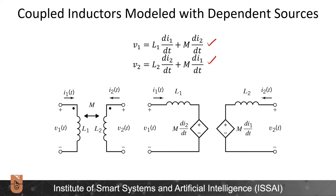We can convert a coupled inductor circuit to a circuit with dependent sources, allowing us to utilize all the circuit analysis methods we have learned. The first part of the circuit is represented with an inductor L1 and a dependent source depending on the current i2. For the second part, we have inductor L2 in series with another dependent source whose value depends on the derivative of i1 with respect to time.